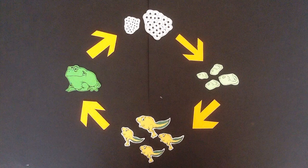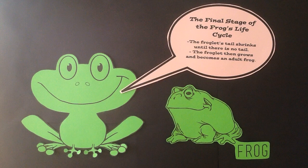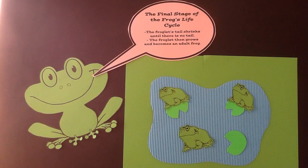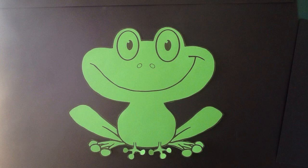The final stage of a frog's life cycle is when the froglet develops into an adult frog. The froglet's tail will shrink until there is no tail, while the arms and legs develop into their full size. The frog's life cycle is complete after around sixteen weeks. Once the frog is fully developed, it can lay eggs and begin the frog's life cycle again for a new bunch of frogs.